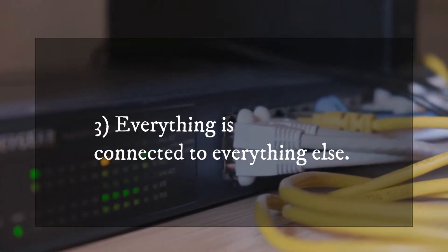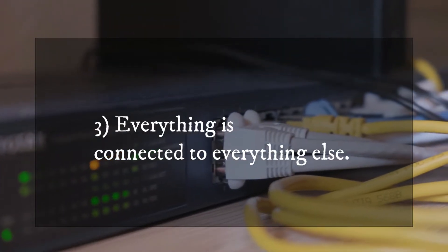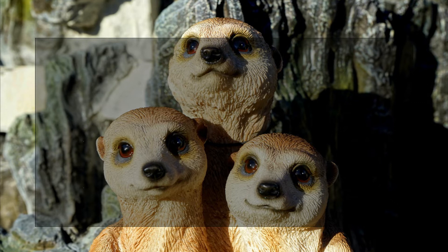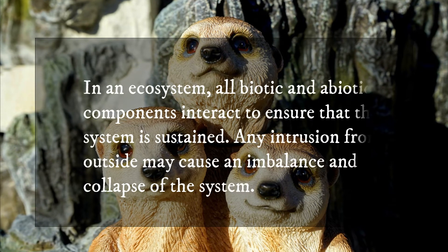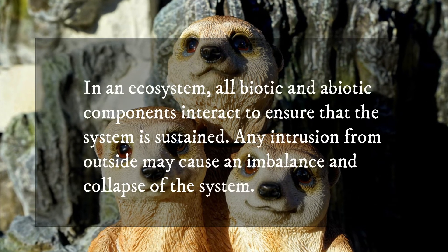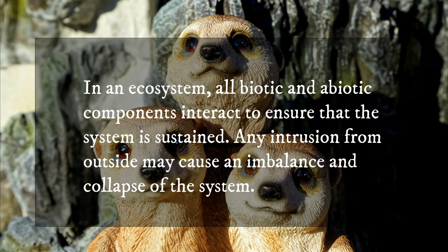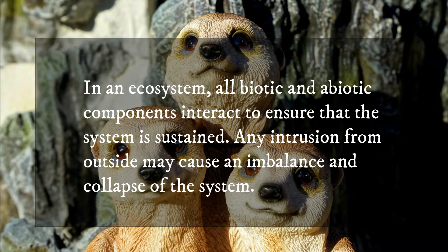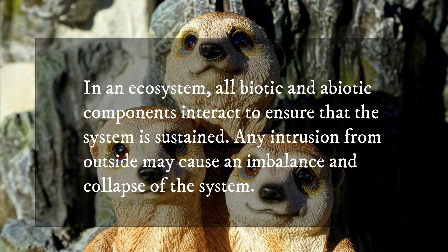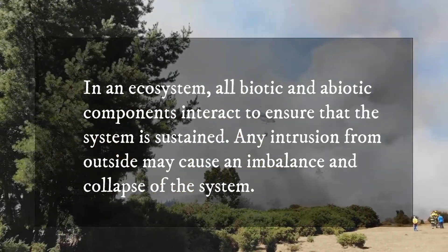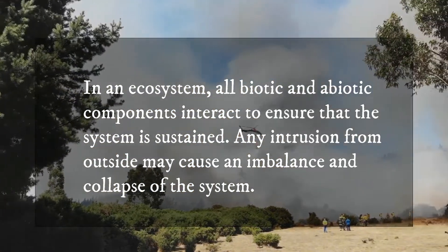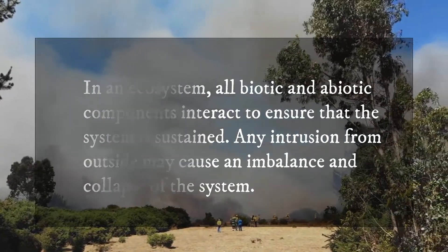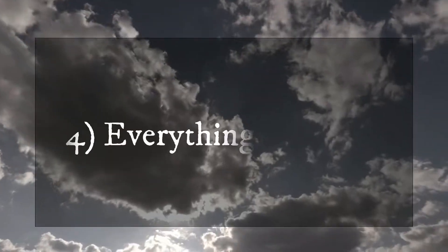Principle 3: Everything Is Connected to Everything Else. In an ecosystem, all biotic and abiotic components interact to ensure that the system is sustained. Any intrusion from outside may cause an imbalance and collapse of the system.